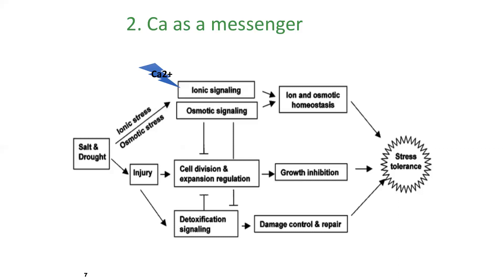Calcium buffers the plant's stress response. The plant doesn't create more energy because of calcium, but it loses less through stress because it's more able to tolerate stress by activating its responses faster. That's the second role of calcium as a messenger.